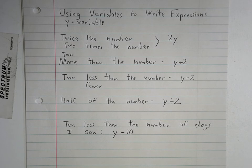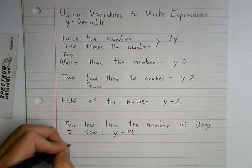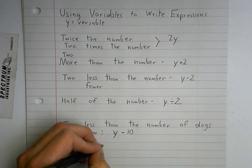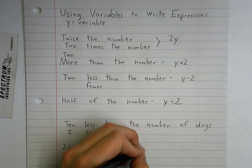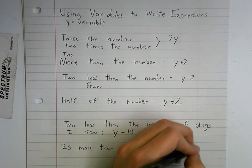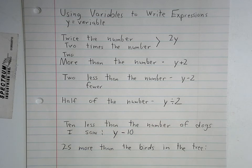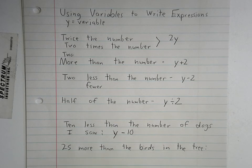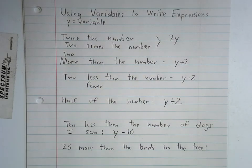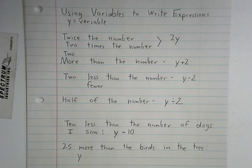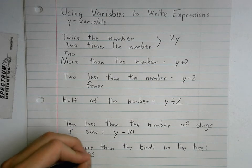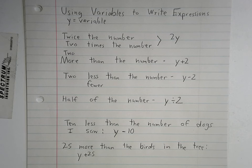So, on these problems we're doing right now, we're not just going to have a one-number answer. Because there's a variable in there. There's a number we don't know that we're using a symbol to show. What if I wanted to say, 25 more than the birds in the tree. Do I know how many birds that I saw in the tree? I don't. So, what symbol should we use for that? What symbol have we been using for numbers we don't know? Y. So, I'm going to start with my y. Now, if it's 25 more, what am I going to do to that y? Add 25. So, y plus 25 is exactly right. That is 25 more than the amount of dogs I saw.